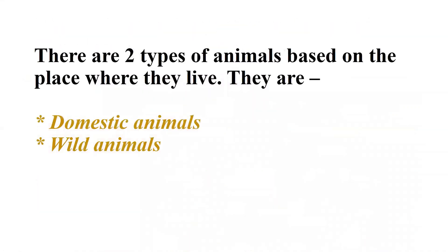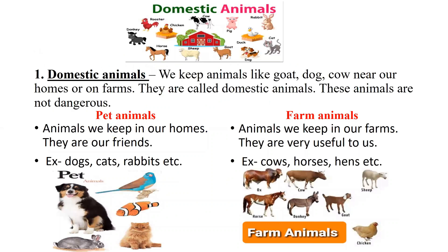There are two kinds of animals based on the place where they live: domestic animals and wild animals. Animals like goat, cow, sheep, and hen that are useful to us — we keep them near our homes or on farms. These are called domestic animals. These animals are not dangerous.